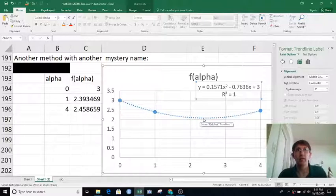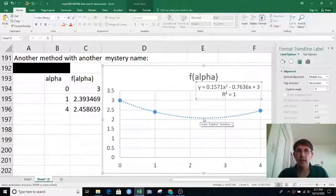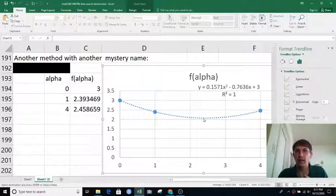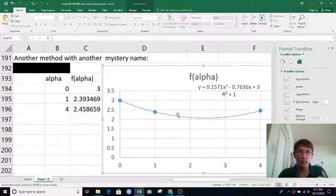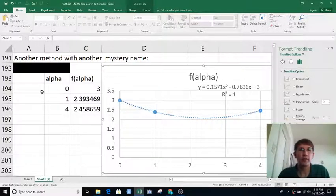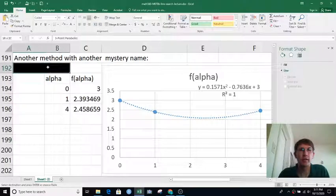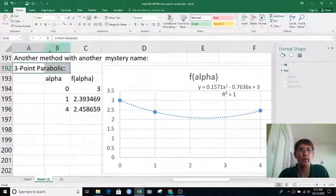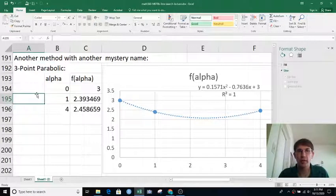Then maybe I could move there along my gradient and then find a new gradient. Or I could make that my new point and then use that point and some other recent points, fit another parabola and get a new minimum from that and keep doing that just within the line search. So this method has a mystery name, but now we know it's involving parabolas. We'll reveal it's called the three-point parabolic.